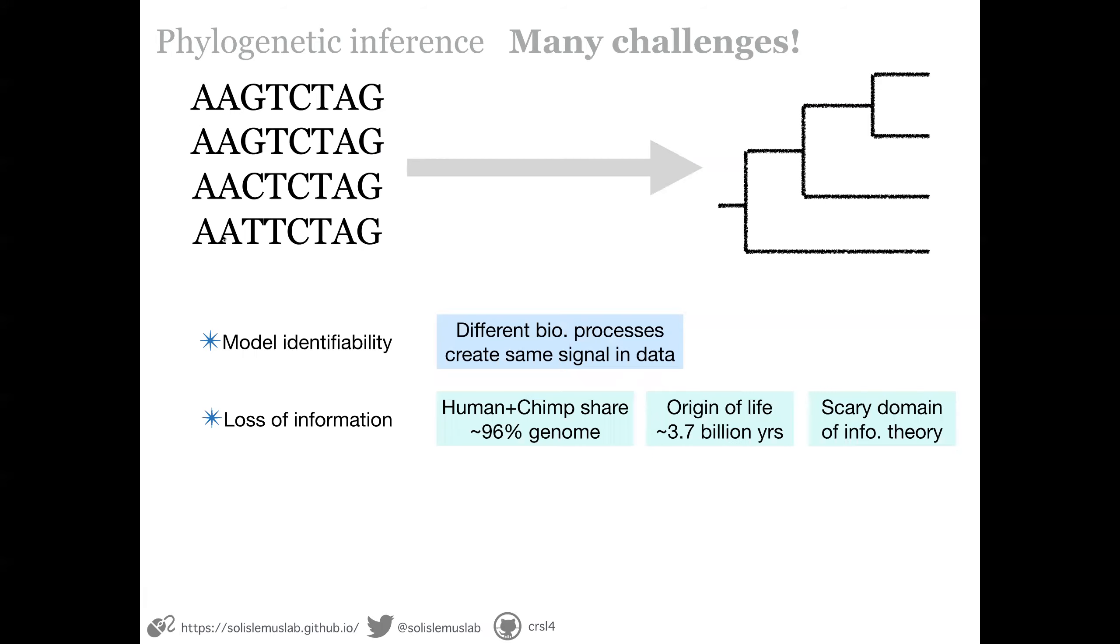There's lots of information because of the process, like humans and chimpanzees, they share a lot of the genome, the origin of life is a billion years ago. And then we are starting to get into the domain of information theory.